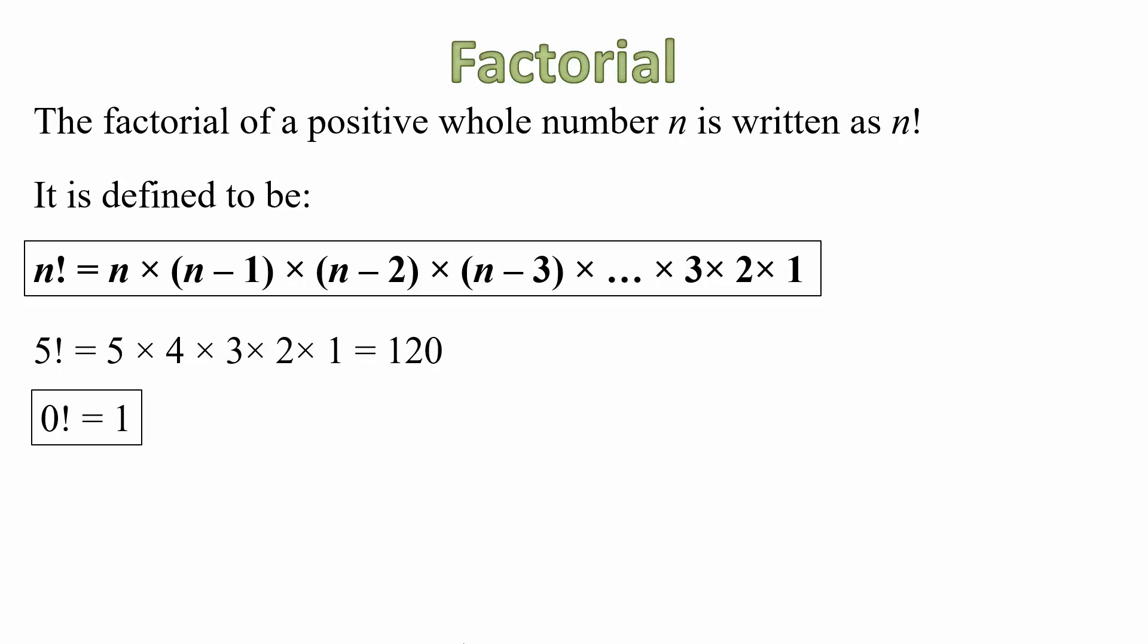Now what that means is that n factorial is the product of the first n positive whole numbers. And the example that I've shown there, 5 factorial, that is the same as 5 times 4 times 3 times 2 times 1, which is equal to 120. A special condition of that, we take that 0 factorial is equal to 1.